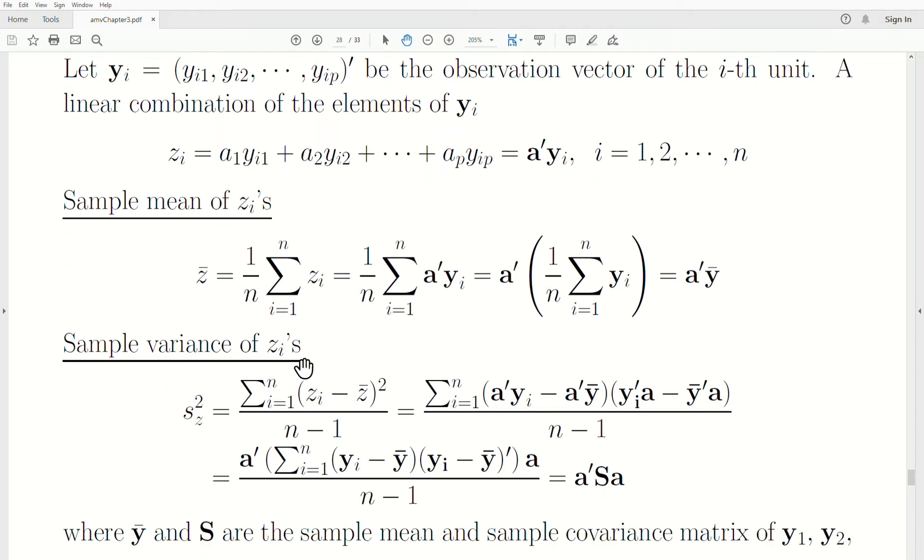The sample variance of the Z's, let's represent it by s²_z. So, that's the sample variance of the Z's, which is really just the average squared distance from the mean. Adjusted for bias, that's what the N minus 1 is. But, now let's replace what Z is.